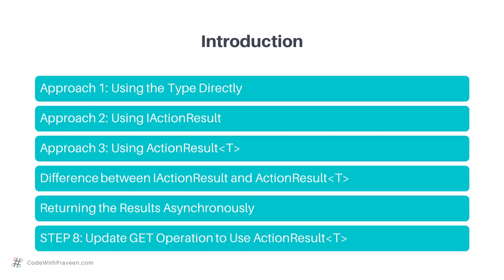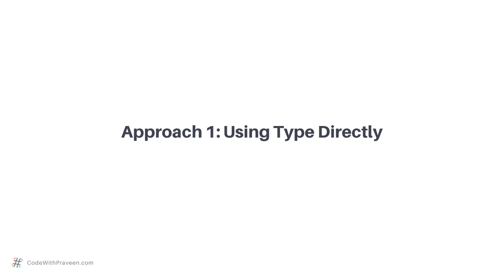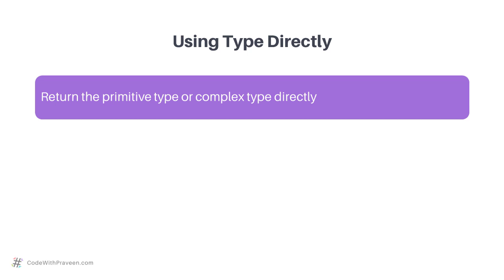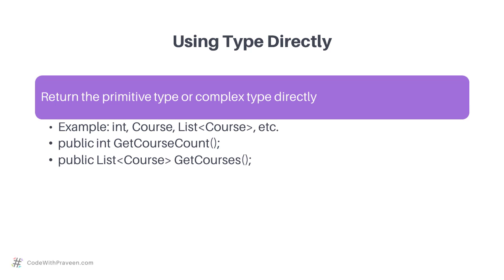Let's get started with the first approach, namely using the type directly. This involves returning the primitive type or complex type directly from the method. For example, int, string, and bool are some examples of primitive types. In a similar sense, Course and List of Course are some examples of complex types. These complex types refer to the custom classes that you define in your project.